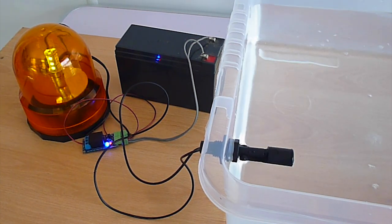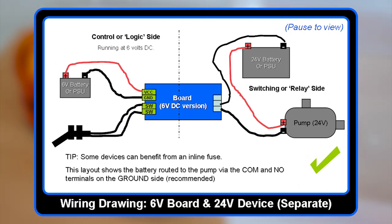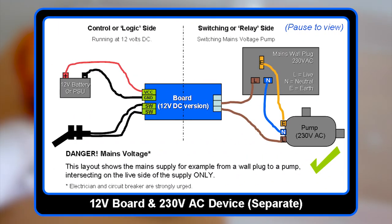Here are some other diagrams on how to connect it for different scenarios. In this example, we have a board powered by a 6 volt battery controlling a 24 volt device using two separate power sources. You can pause the video to view these in more detail, or they're available on our website, which is IACSElectronics.com. And here we have a 12 volt board controlling a mains powered pump.